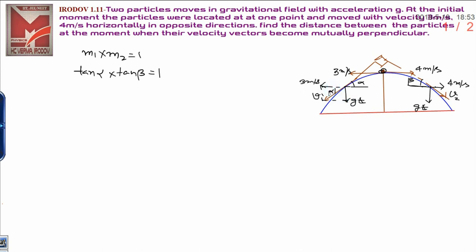Alpha will be gt divided by 3, into beta is also gt upon 4, which is equal to 1.